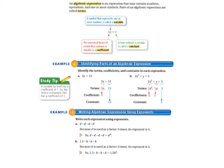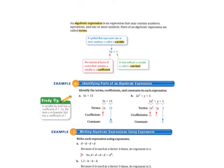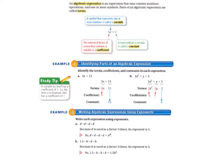At the top of the page, we're reminded that an algebraic expression is an expression that may contain numbers, operations, and one or more symbols. Parts of an algebraic expression are called terms. Even though you wrote all of the definitions in your notebook during our last lesson, this is a really good graphic to copy into your notebook. So take a minute and pause and copy this with all of the parts labeled into your notebook.